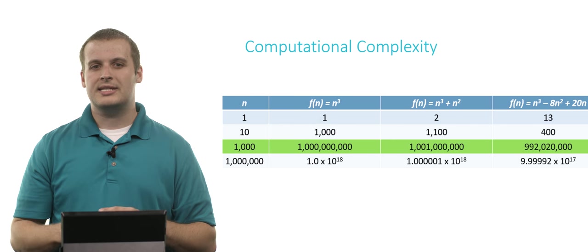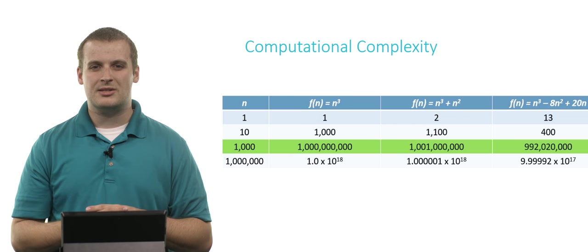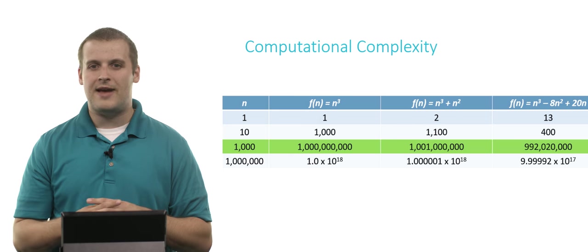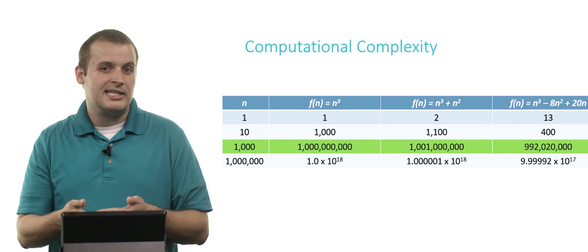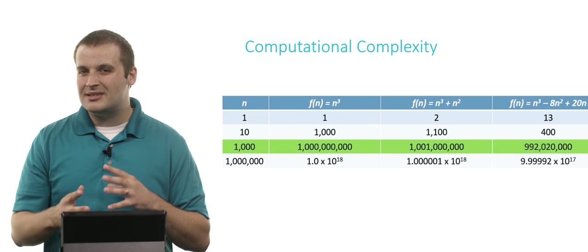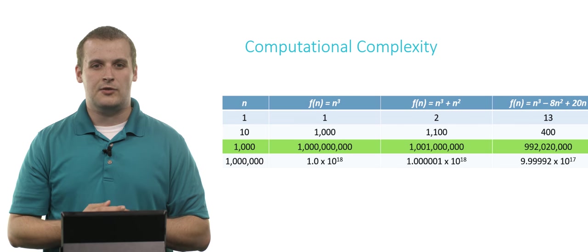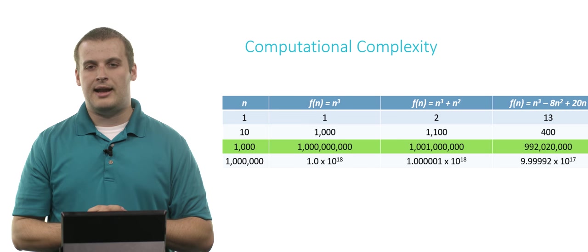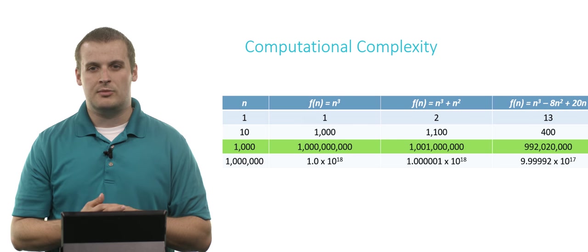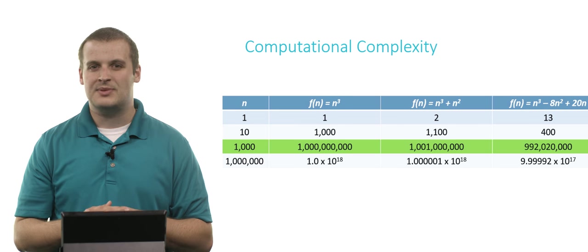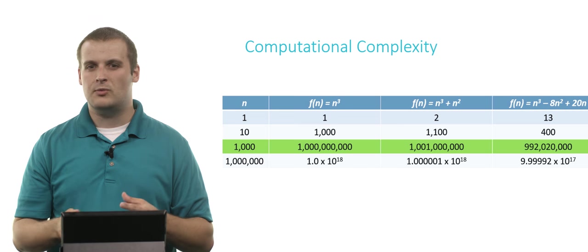But look what happens as our numbers get even bigger. Now, the differences between these algorithms start to become a little less apparent, and the fact that there are lower ordered terms, or rather terms with lower exponents, start to kind of become irrelevant, right? If a data set is of size 1,000, and the first algorithm runs in a billion steps, and the second algorithm runs in a billion and a million steps, and the third algorithm runs in just shy of a billion steps, it's pretty much a billion steps, right? Those lower order terms start to become really irrelevant.